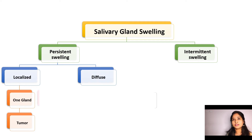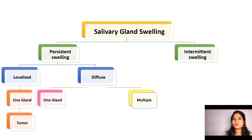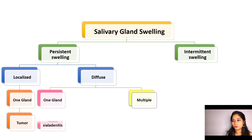If it is a diffuse swelling, we have to see whether it involves one gland or multiple glands. If it is involving only one gland, then it would be mostly acute salivary.